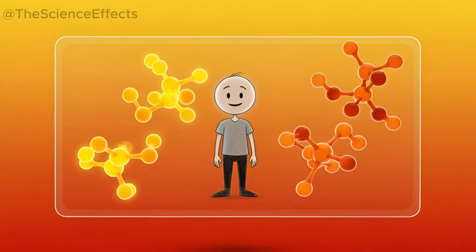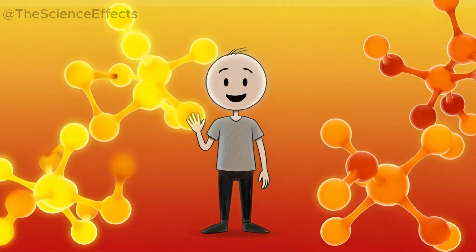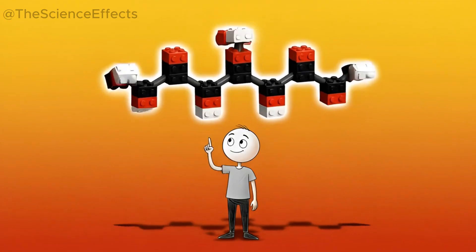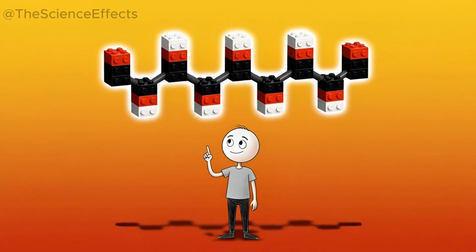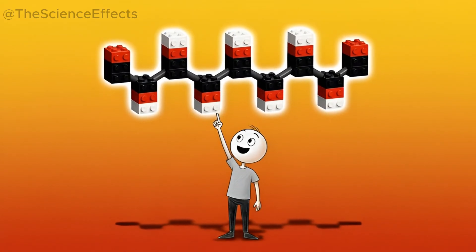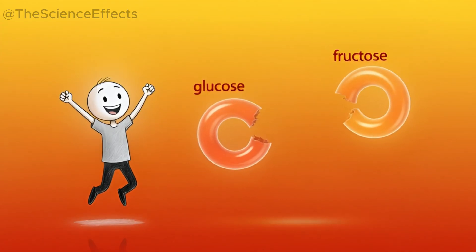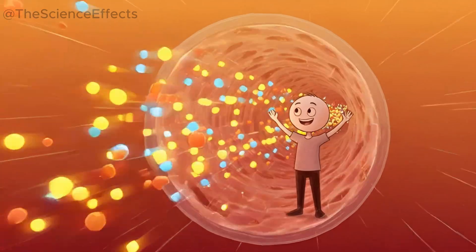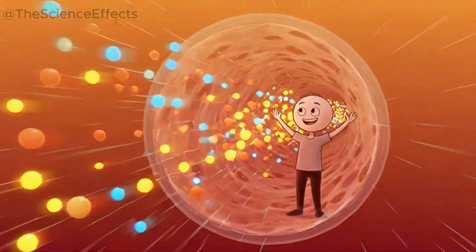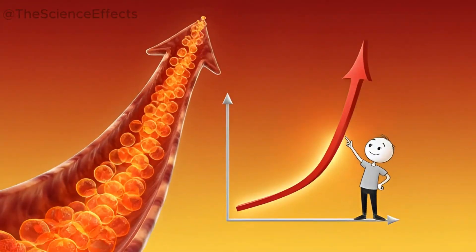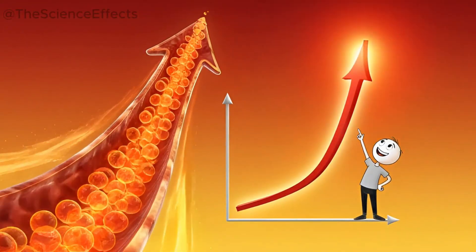Before we get to what happened, we need to understand what we're even talking about. What's really the difference here? Think of table sugar, sucrose, like a simple Lego brick. It's just two smaller sugars, glucose and fructose snapped together. Your body breaks them apart almost instantly, and you get a fast rush of both. Simple, quick, and very effective at spiking your blood sugar.